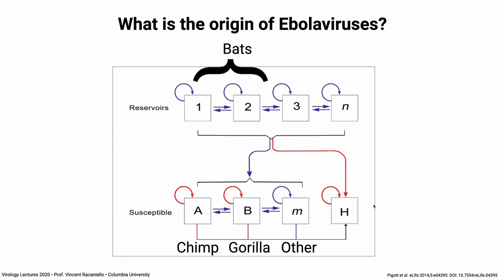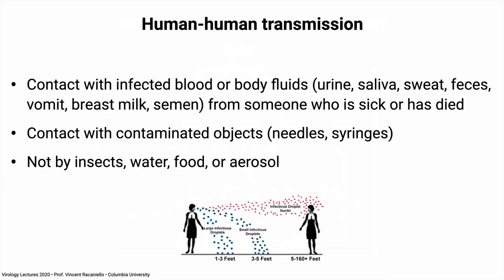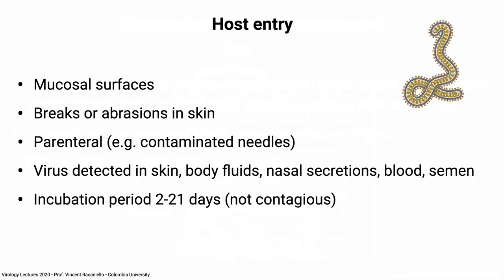Human-to-human transmission of Ebola requires contact with infected blood or body fluids from a very sick person or someone who has died during burial preparations. Needles and syringes have also transmitted the disease. It is not transmitted by insects, water, food, or aerosol — unless you are doing a medical procedure generating large droplets at close range. The virus enters at mucosal surfaces or through breaks in skin. Virus is present in all bodily fluids, and contact with any of them can transmit infection. Incubation period ranges from 2 to 21 days; during this period you're not contagious and not shedding enough virus to infect someone else — very different from SARS-CoV-2.